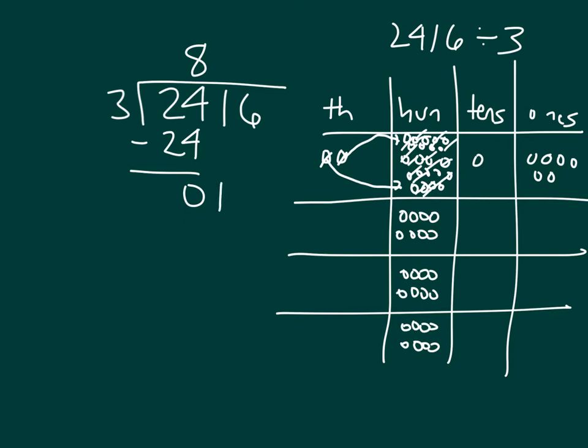Next, I bring down the one. So I have that one ten that I'm trying to distribute into those three groups. And you'll notice that there's going to be zero tens within each of those groups, because that one needs to be exchanged for ten ones. So, within the standard algorithm, what that means is that one, when we are dividing by that three, it is zero. There's zero within each of those groups. Zero times three is zero, one minus zero is one, and I bring down the six.